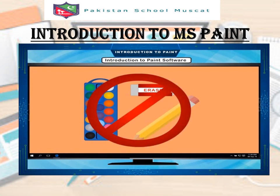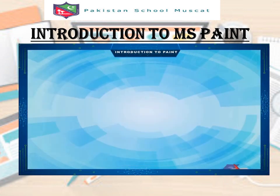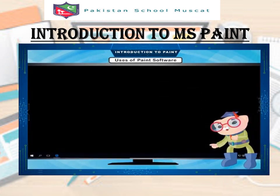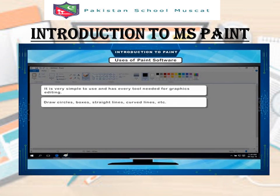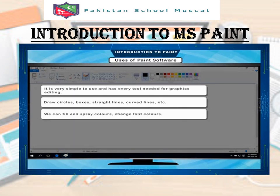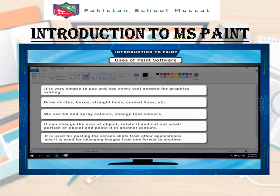But you do not need all these things for drawing and coloring on the computer. In the computer we use the Paint program to make our drawings. Uses of Paint software: it is very simple to use and has every tool needed for graphics editing. Draw circles, boxes, straight lines, curved lines, etc. We can fill and spray colors, change font colors, change the size of objects, rotate them.